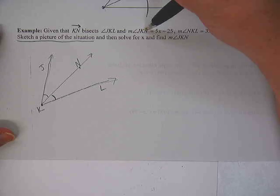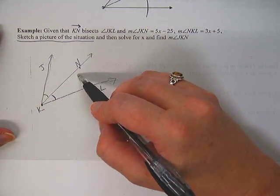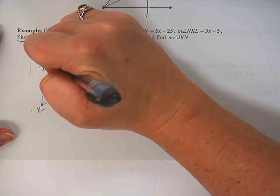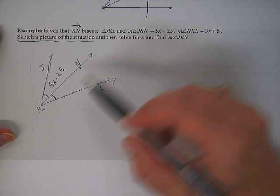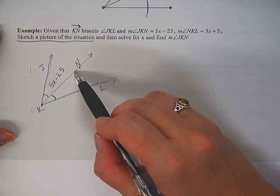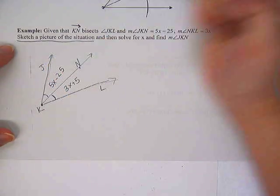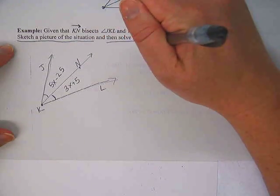Now let's finish reading through our problem. The measure of angle JKN, so JKN would be this angle here, is 5X minus 25. The measure of angle NKL, which is this angle right here, is 3X plus 5. Sketch a picture of the situation. Done.